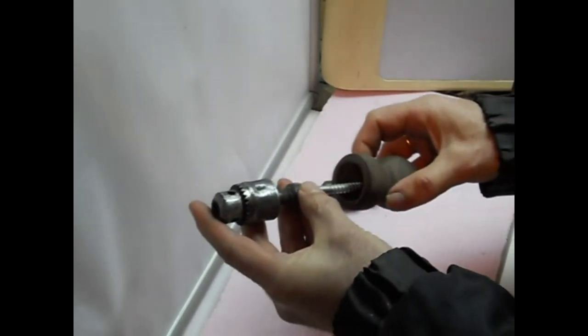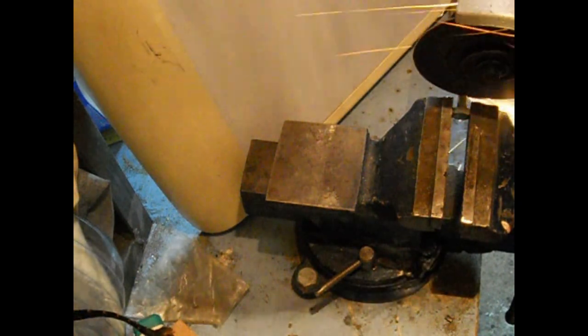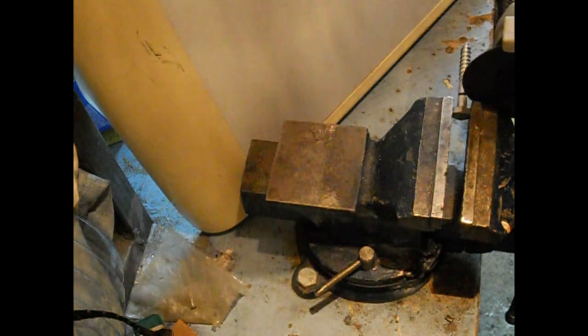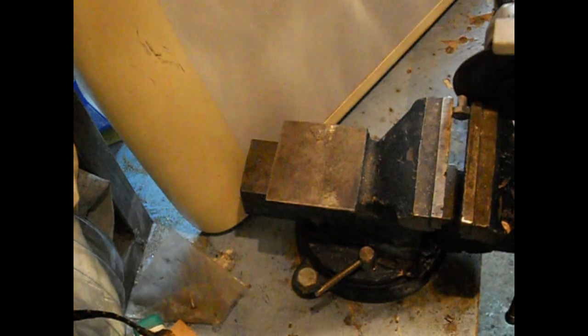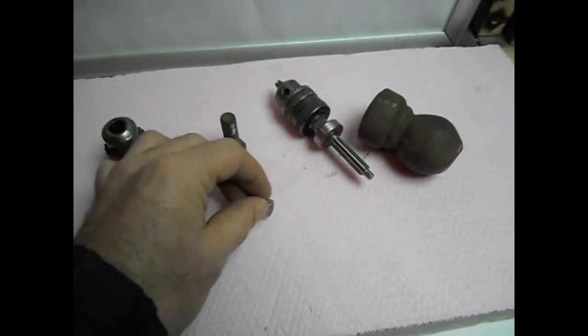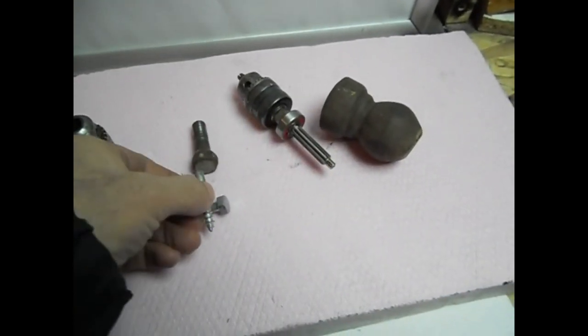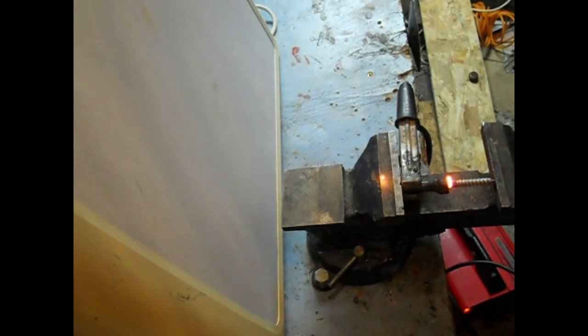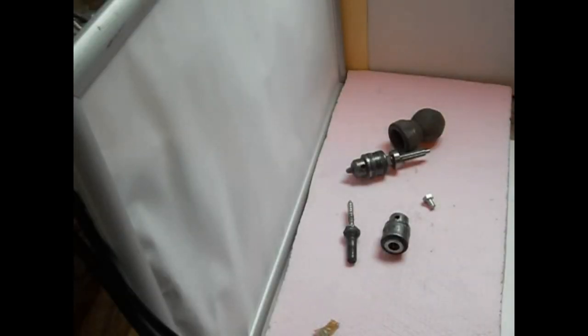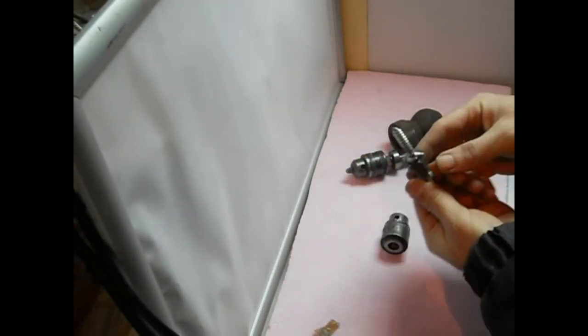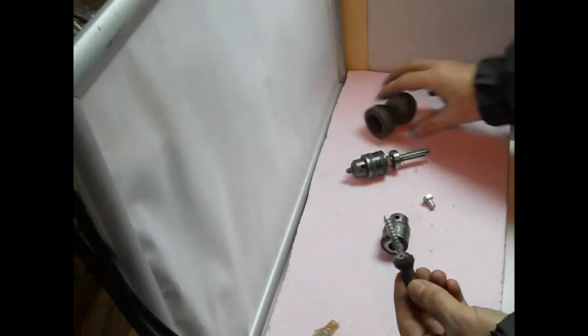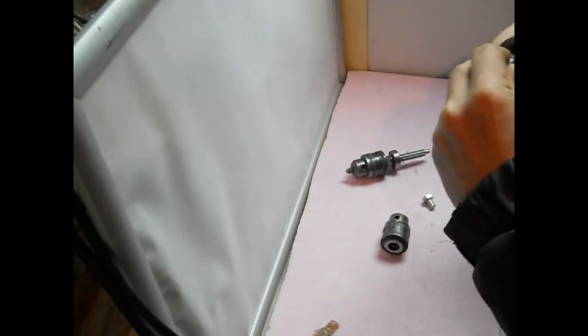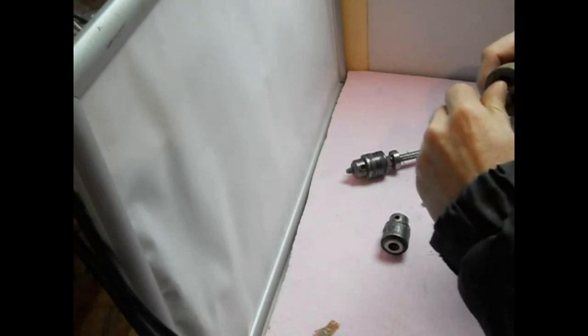We shortened the screw because it was too long and now we can weld our two screws. Now we have everything ready, the screws are welded. We drill an eight millimeter hole in the wooden part and now we can twist it all together.